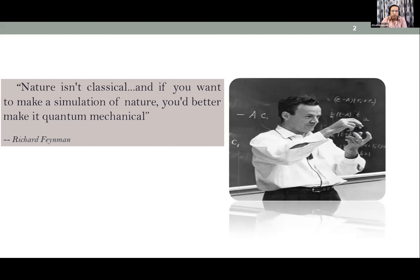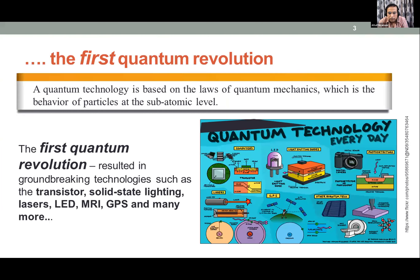Starting with Richard Feynman's famous quotation: 'Nature is not classical, and if you want to make a simulation of nature, you'd better make it quantum mechanical.' We know there was a first quantum revolution, in which quantum technology gave us LEDs, computers, lasers, GPS systems — all based on the laws of quantum mechanics.